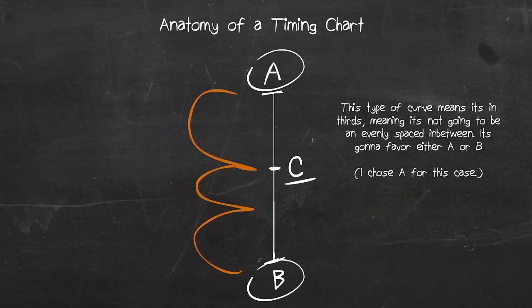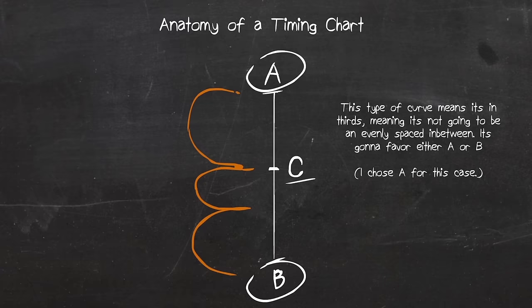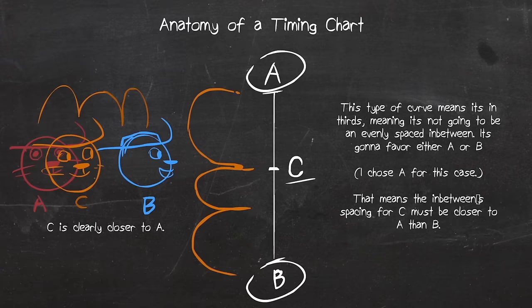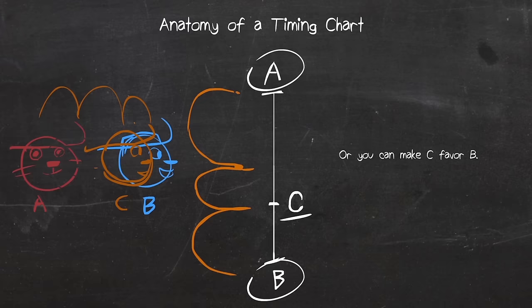Aside from half curves, there are curves called thirds, and has three meeting points. This type of curve means that C is not going to be evenly spaced between A and B, and will actually favor one keyframe. You'll notice how one point of the curve meets at C, and the other doesn't have a frame. It's imaginative. This is just emphasizing that C is favoring A over B. Since C is closer to A, its spacing will be much smaller, leaning towards A, or you can make C favor B.